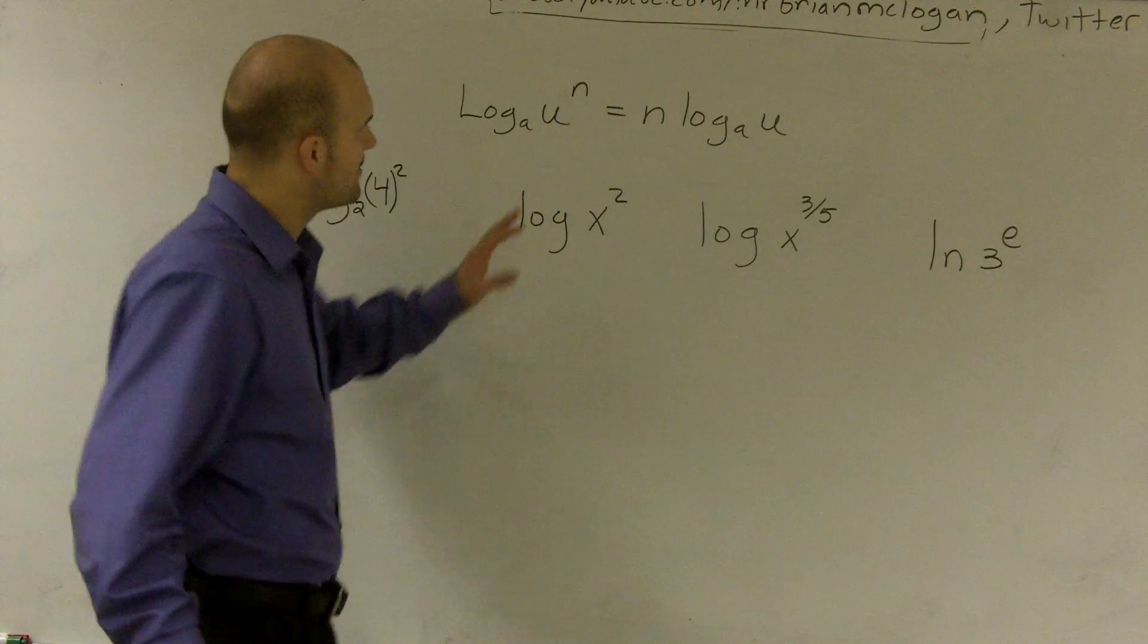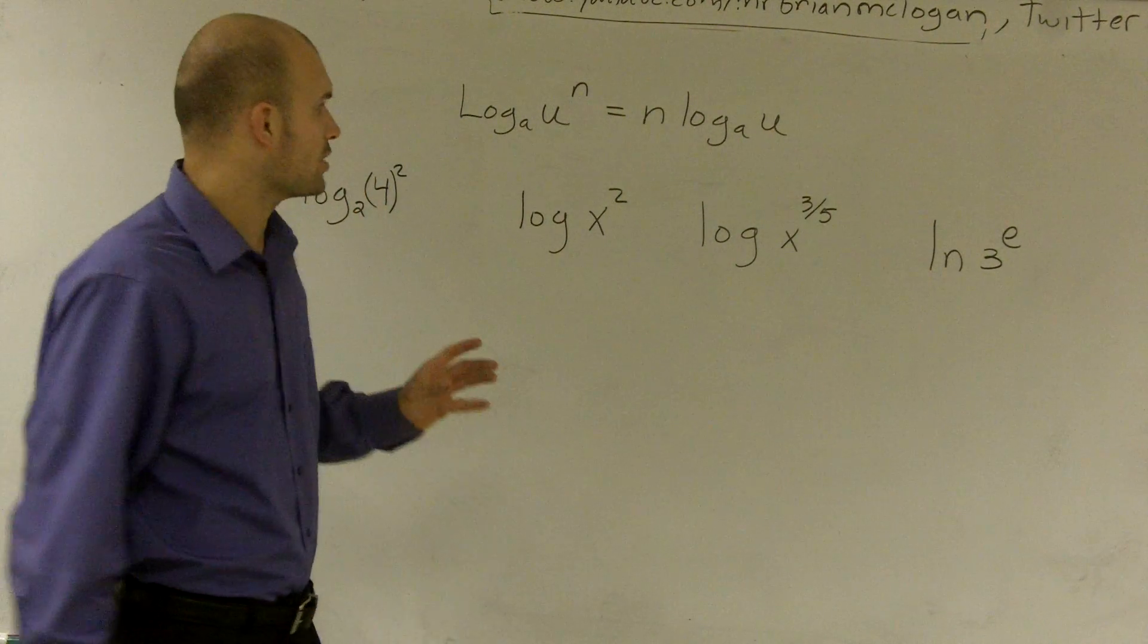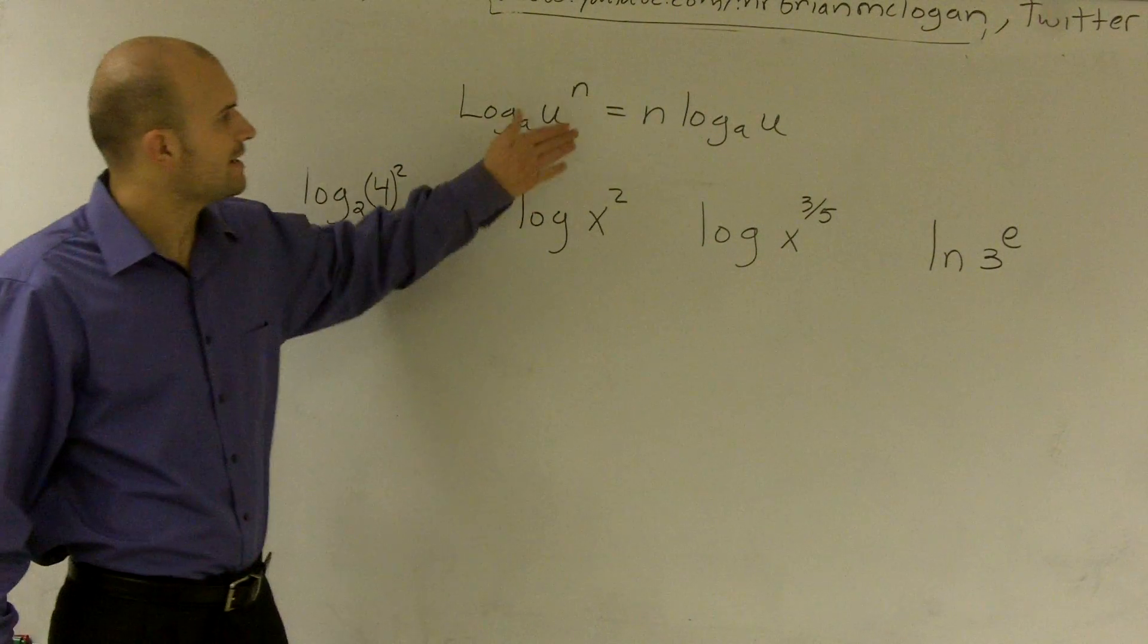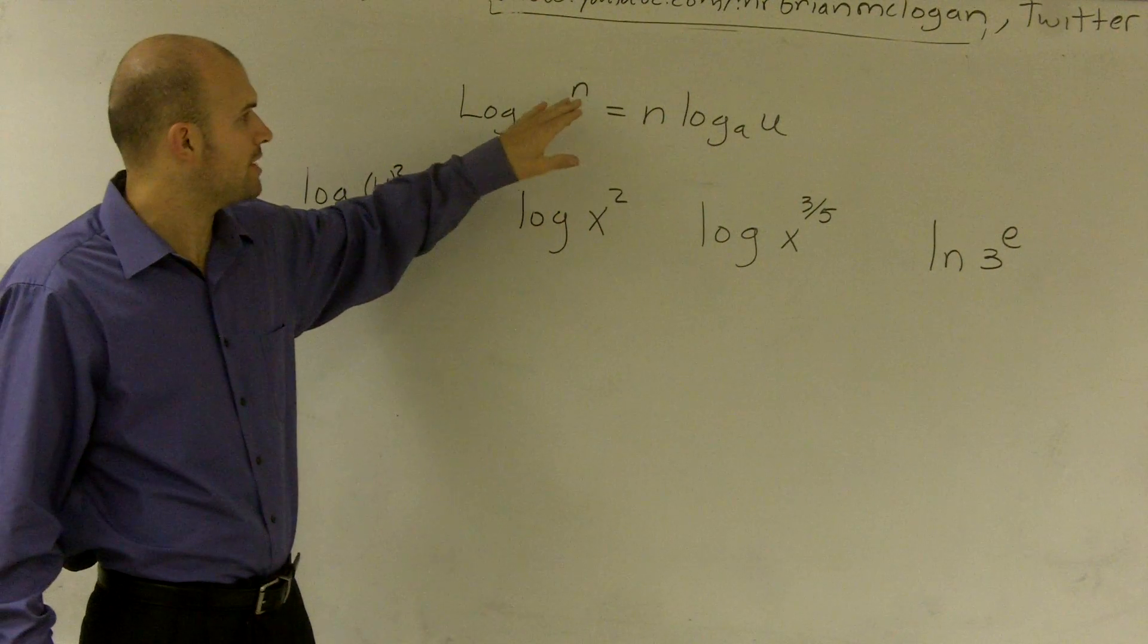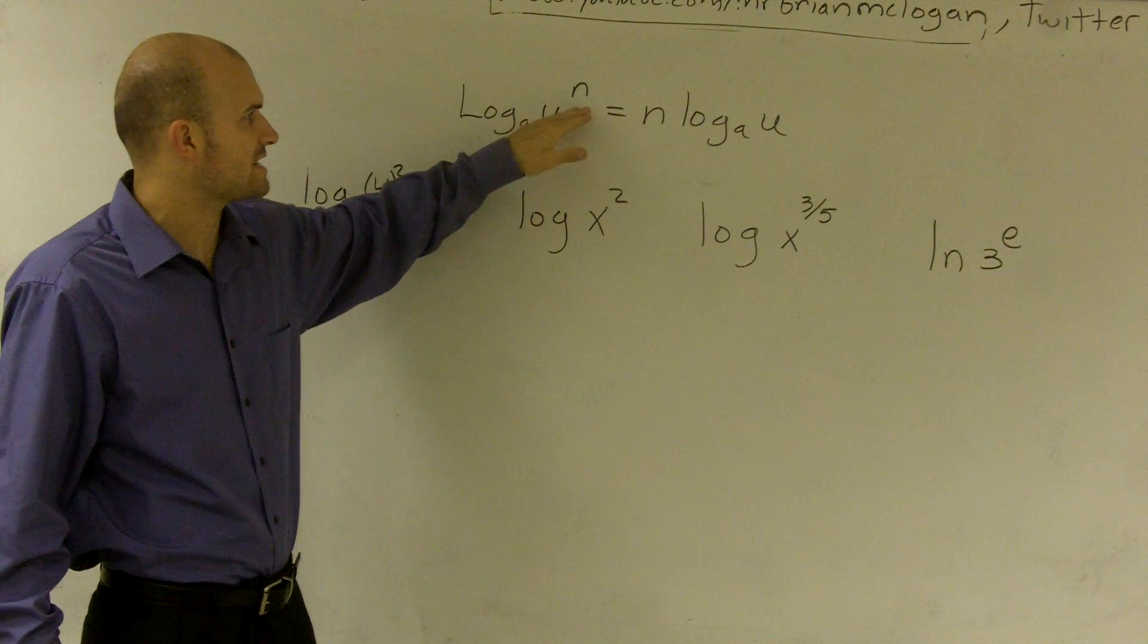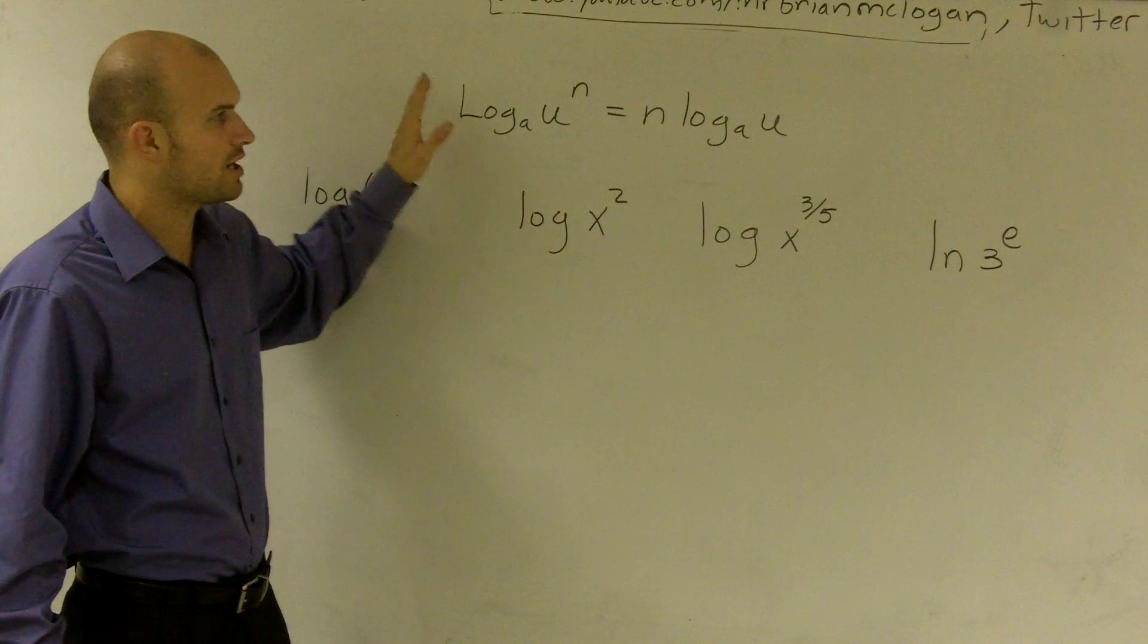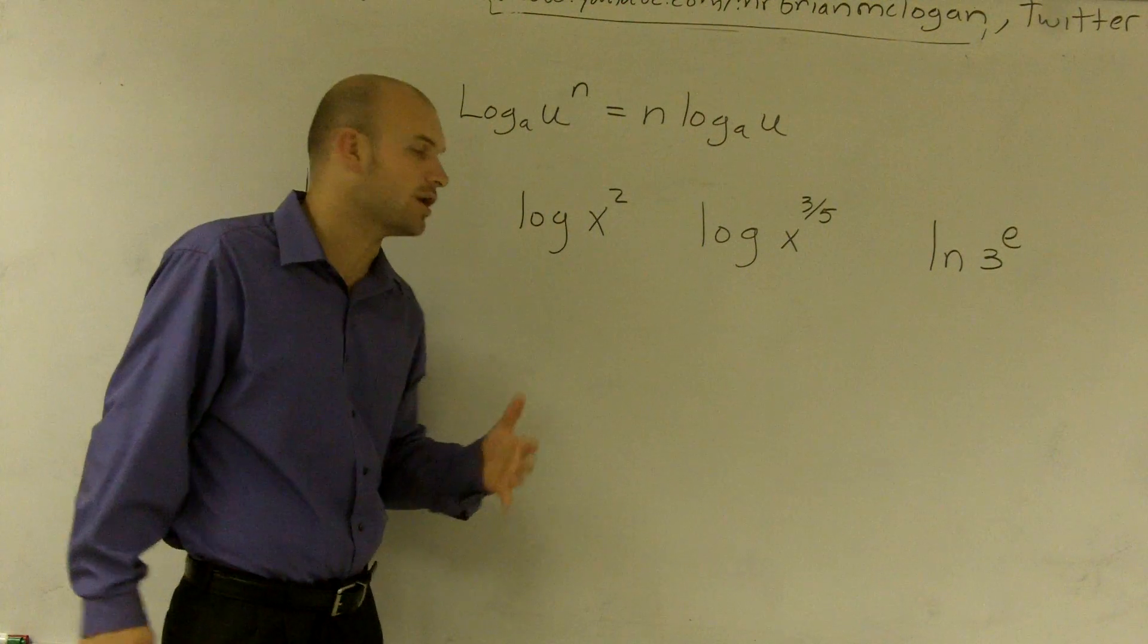Alright, what I'd like to do is show you guys our last logarithm property. What our logarithm property here states is that whenever I have a value or number as my exponent, what I can do is I can relate that in front of my log and multiply it across when I value my log.